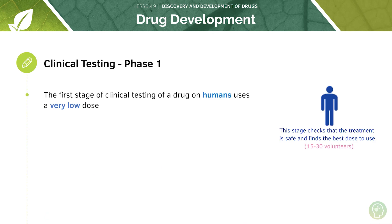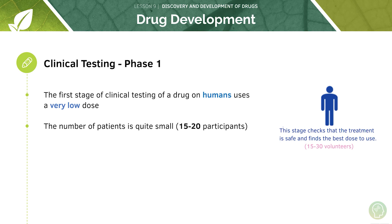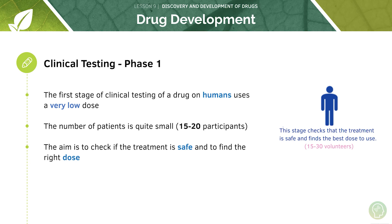Step three is phase one of clinical testing, which uses very low doses of the drug on humans. This stage checks that the treatment is safe and finds the best dose to use. To maximise safety, we use the smallest number of patients possible — around 15 to 20 volunteers — and we work up slowly the concentrations of the drug to find the right dose, titrating to the right kind of dose we want to use in a clinical setting.